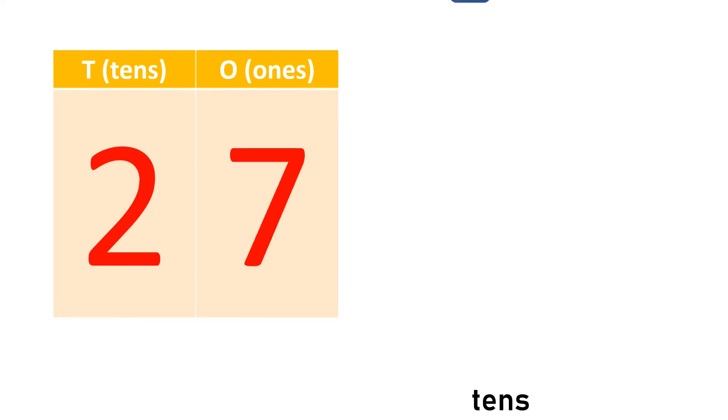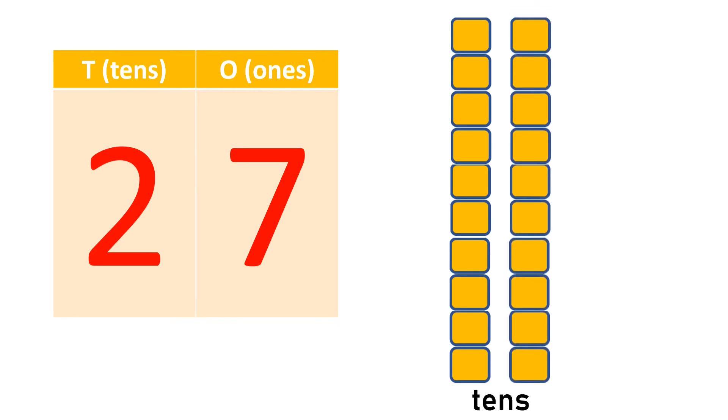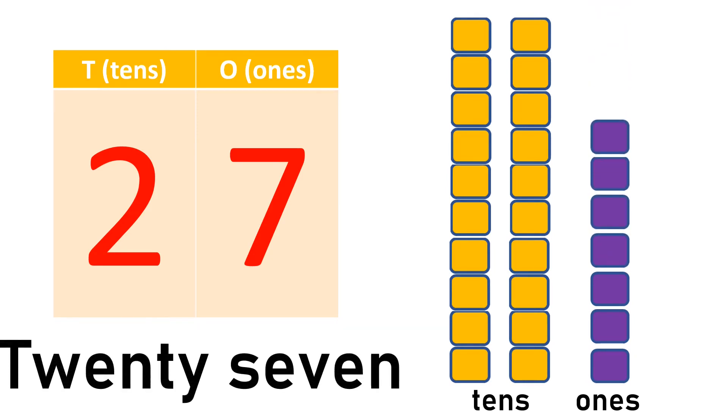2 tens and 1, 2, 3, 4, 5, 6, 7, 7 ones makes 27, TWENTY-SEVEN.